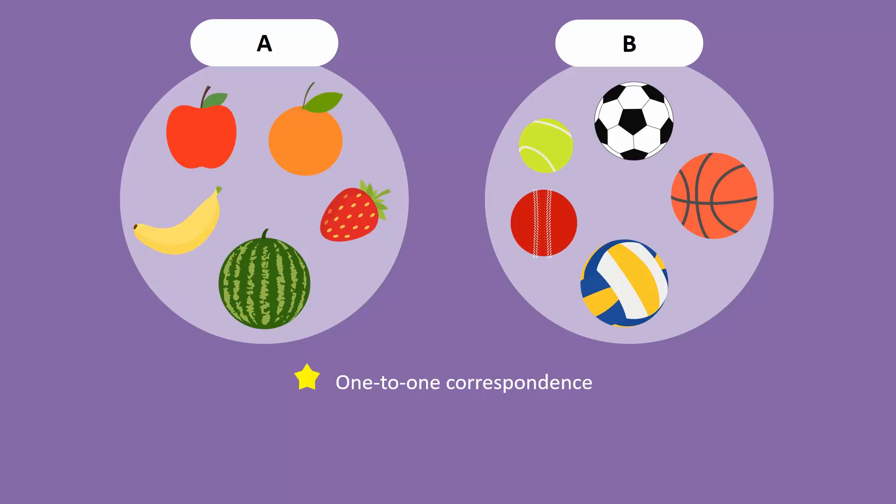This means that for each element in A, there is a corresponding element in B. We can use these double-headed arrows to indicate one-to-one correspondence between the elements.